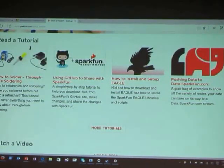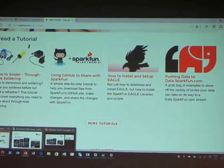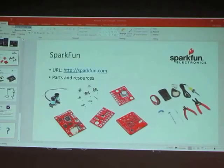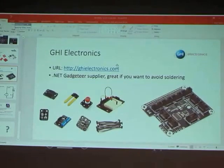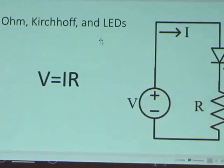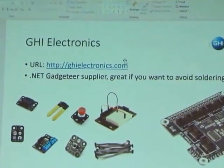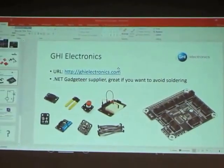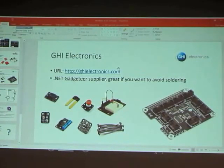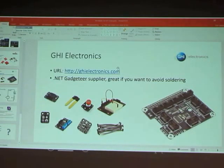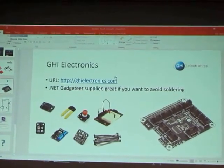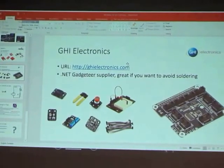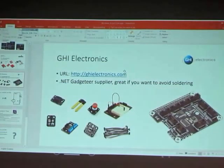The third company is a small company in New York State. They started out with Gadgeteer — something Microsoft created with the .NET Micro Framework — to make working with all these sensors easier. Microsoft set up this system called Gadgeteer which takes sensors and puts them onto little boards with standardized connectors, so you don't have to solder.